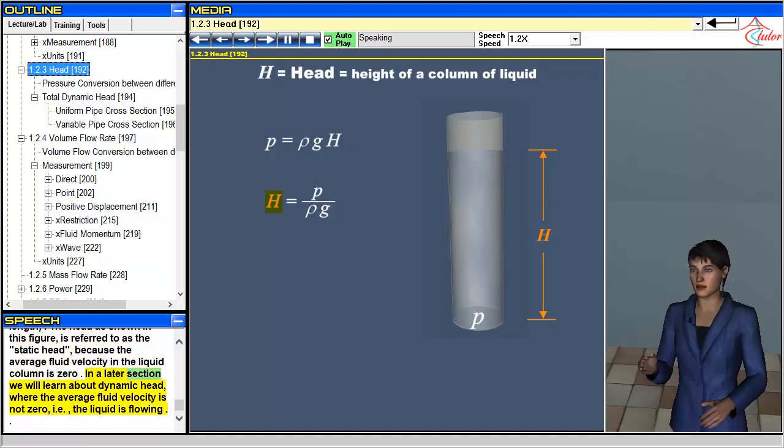In a later section we will learn about dynamic head, where the average fluid velocity is not zero, i.e., the liquid is flowing.